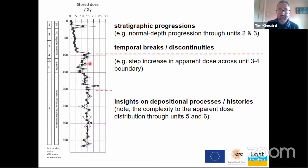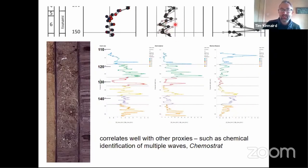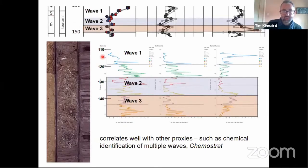We can start to identify specific horizons in the core that we wish to date, but we still have complex depositional histories to interpret. Zooming in on two units, there are at least three couplets going from low to higher dose, low to higher dose, low to higher dose - so that's what we're seeing in the luminescence. Comparing to core scanning geochemistry at a similar depth, this is potentially three waves within that deposit, and we're seeing it both in the luminescence and the geochemistry.